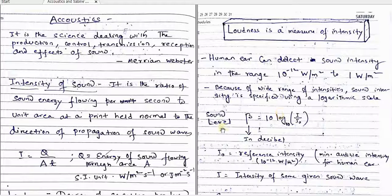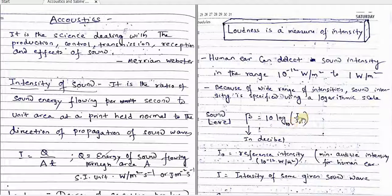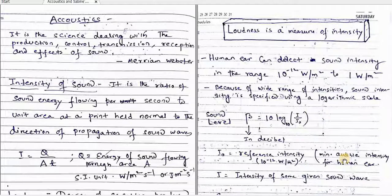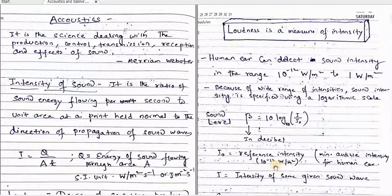So, sound level denoted by beta is equal to 10 log base 10 of I by I0. Here, beta is expressed in decibel and means sound level. I0 is the reference intensity, that is the minimum audible intensity for the human ear, which is 10 to the power minus 12 watt per meter square. And I is the intensity of some arbitrary given sound.